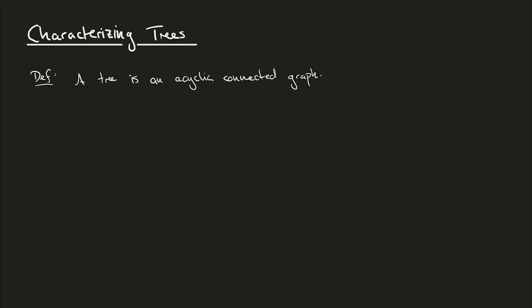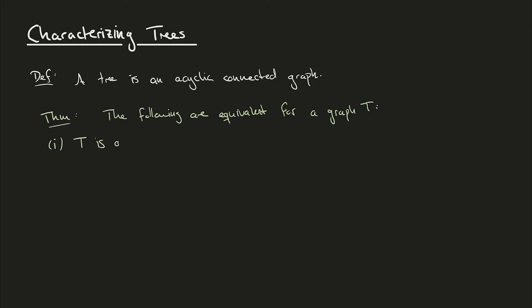As we'll see, there are other concise ways of expressing that a graph is a tree, which are equivalent to this definition. This is the content of the following theorem, which states that the following are equivalent for a graph T. The first point is that T is a tree — that is, T is an acyclic and connected graph. The second point is that any two vertices of T are connected by a unique path.